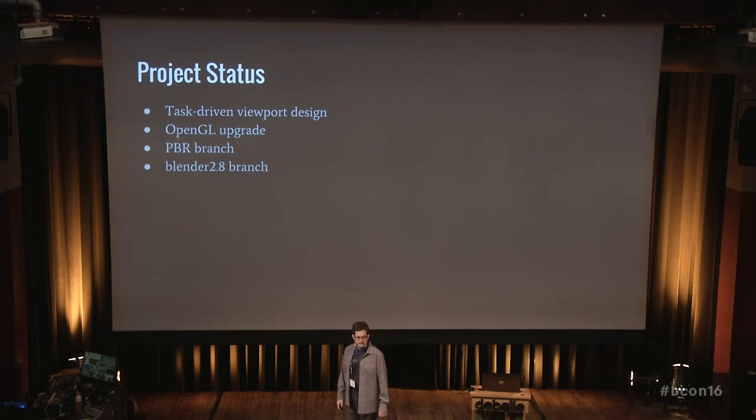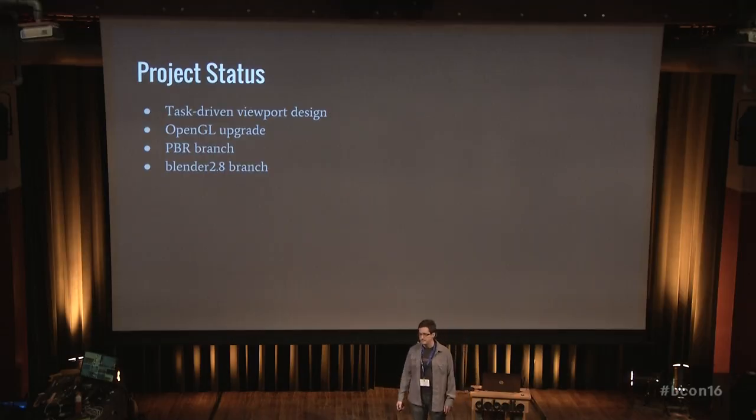Last year at this conference we had a roundtable and said, what are we going to do next for 2.8? We went ahead and decided to go with OpenGL 3.2, and since then decided to go to 3.3, which is essentially the same hardware, just a little bit better. That's really going to help us bring OpenSubdiv to the Mac, to cross-platforms, and enable techniques we just can't do today with OpenGL 2.1.